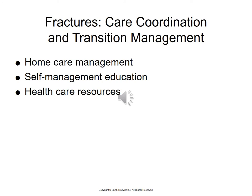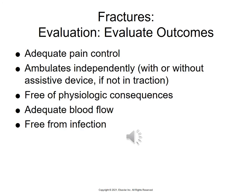For home care management, patients should not put anything down the cast and should try not to scratch under it. They should take analgesics for pain as needed and may need physical therapy and other healthcare resources such as home health for assistive devices. In evaluation, we want adequate pain control, independent ambulation — unless they have traction — freedom from physiologic consequences such as compartment syndrome, adequate blood flow, and freedom from infection.